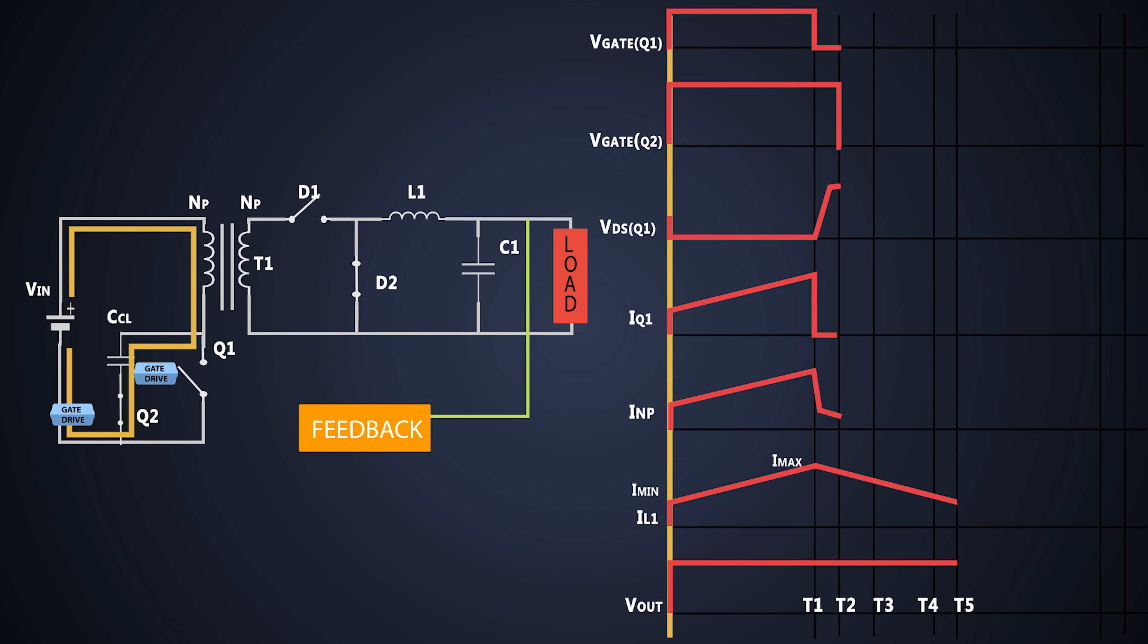At the time T3, the current across the primary of the transformer reaches to zero. Now the polarity of the primary transformer is reversed due to stored energy and the clamping capacitor starts discharging. The voltage across MOSFET Q1 starts decreasing as well.